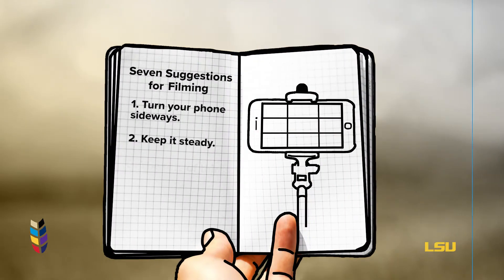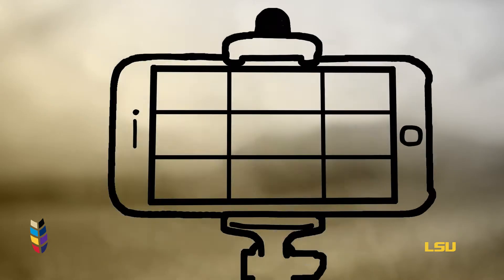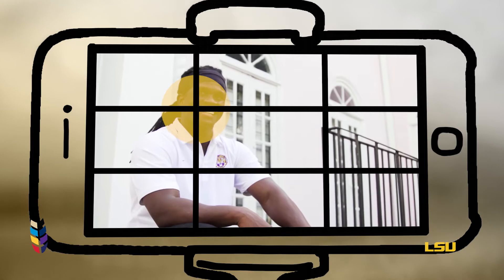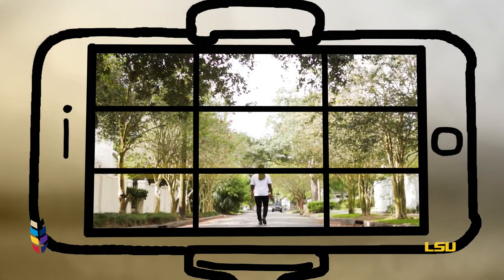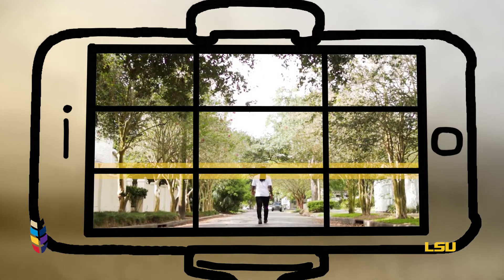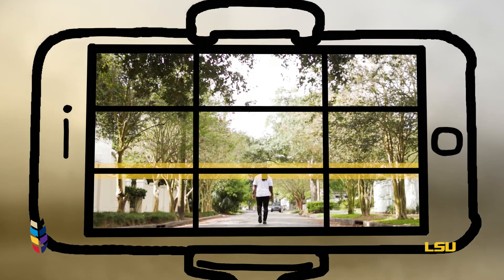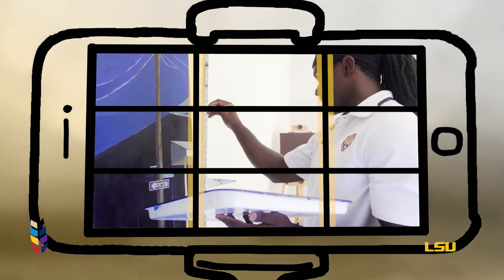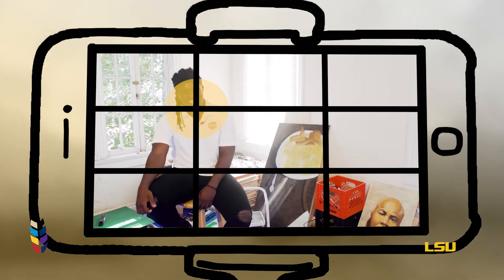Third, the rule of thirds. The theory is that if you place points of interest in the intersections or along the lines, your photo or video becomes more balanced and will enable a viewer of the video to interact with it more naturally.